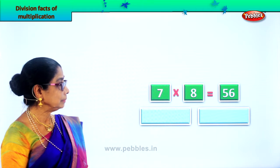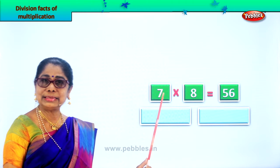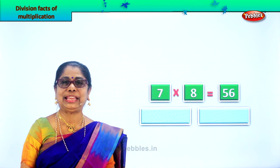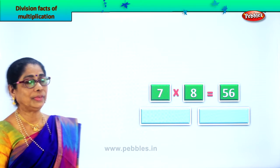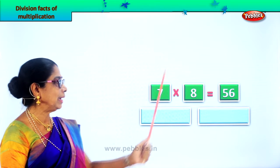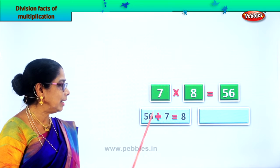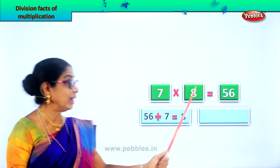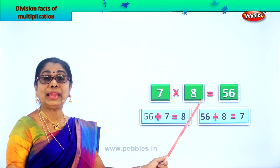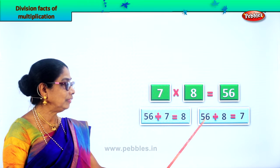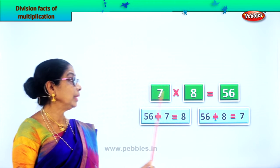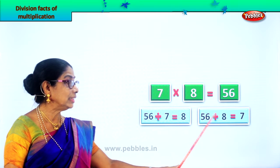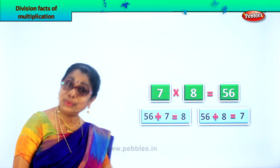Let's take another sum. The sum given to you is seven into eight is equal to fifty-six. Seven eights are equal to fifty-six. That's a multiplication fact. Now we are going to get two division facts. Fifty-six divided by seven — seven goes into fifty-six eight times — so you get the answer eight. Fifty-six divided by eight gives you seven. Seven into eight is equal to fifty-six. Fifty-six divided by seven gives you eight; fifty-six divided by eight gives you seven. Are you enjoying, children?